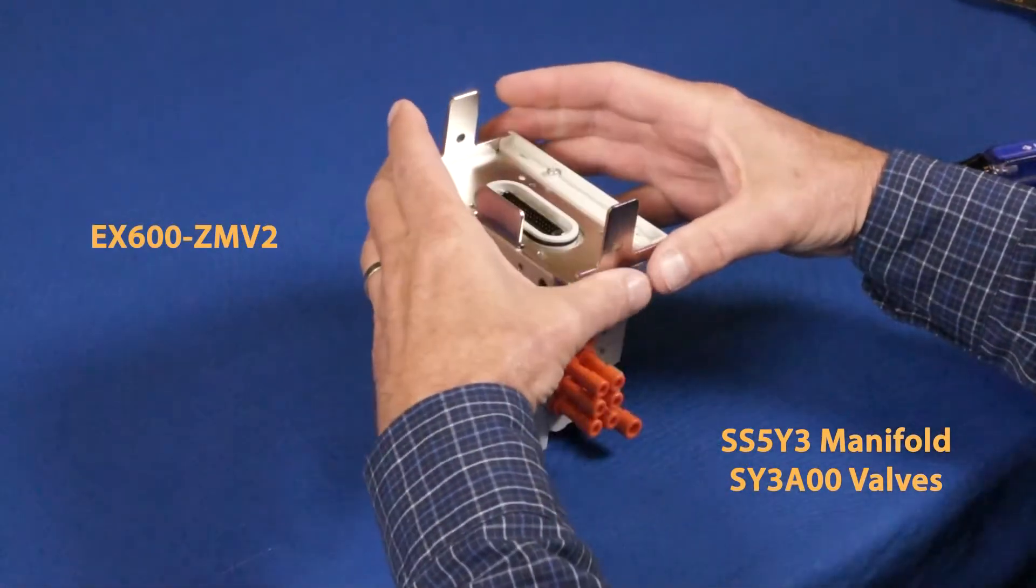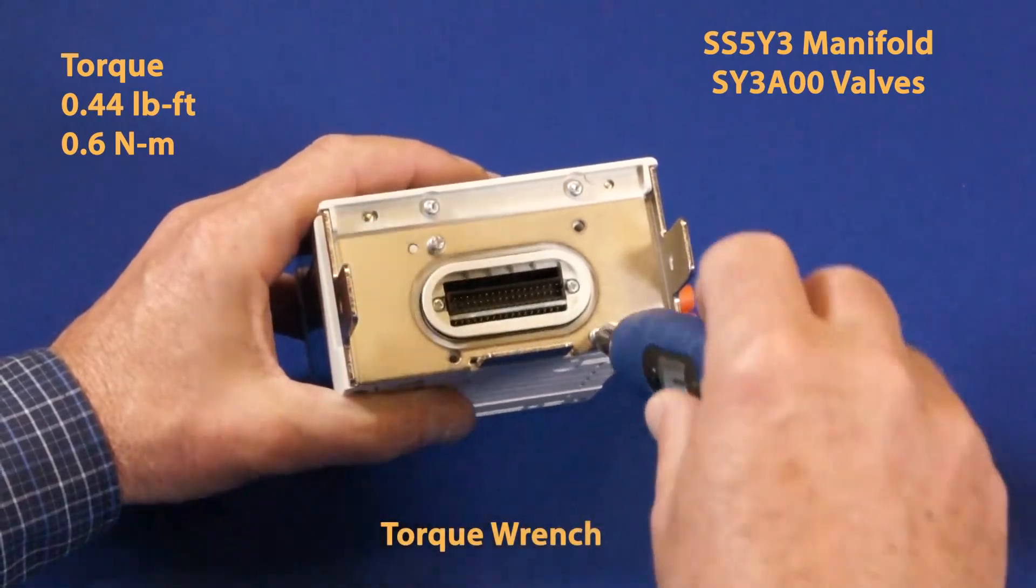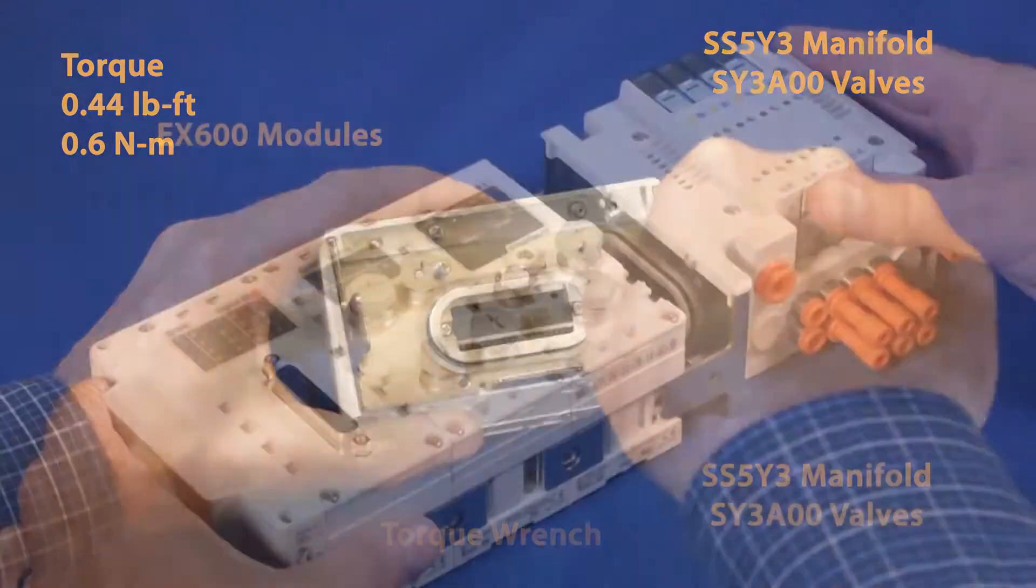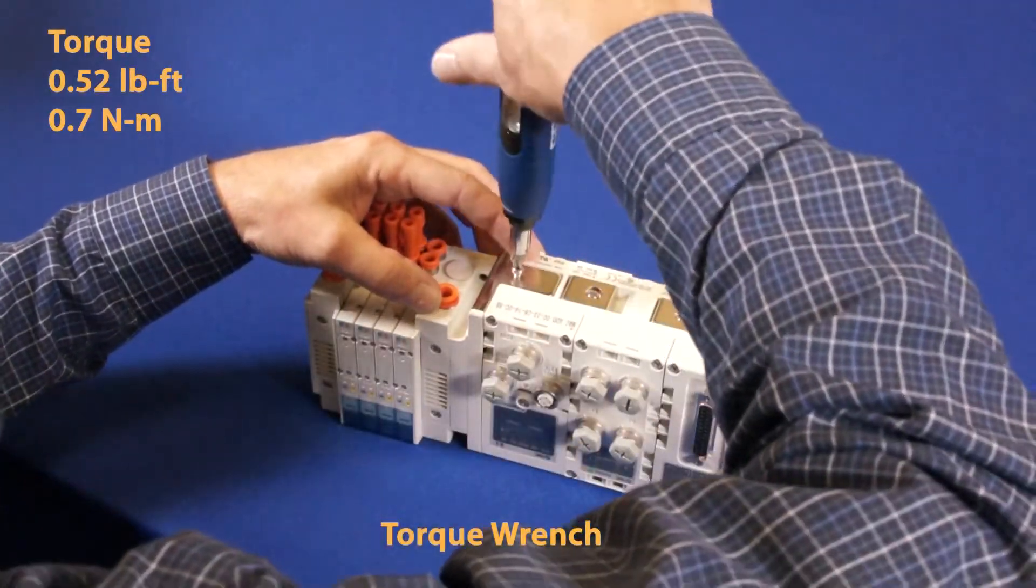On the valve manifold, attach the valve plate with the horizontal tab on the bottom. Then, the valve manifold will attach to the SI module. Tighten down the bracket to spec.